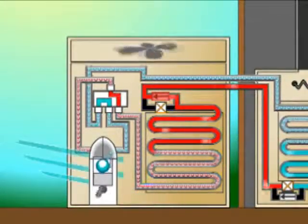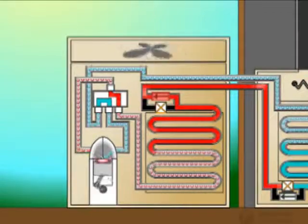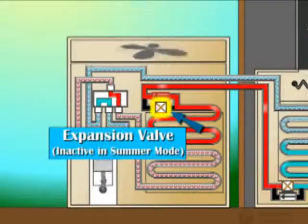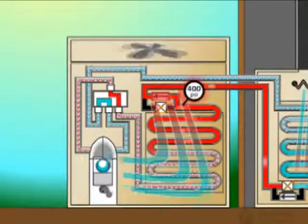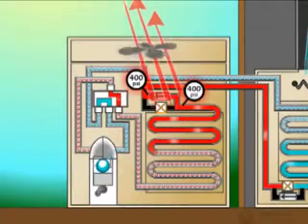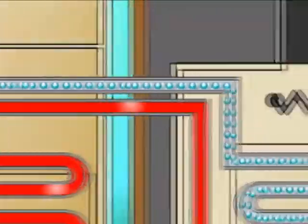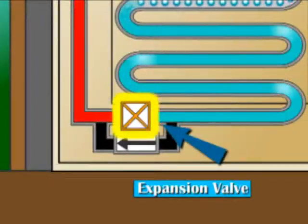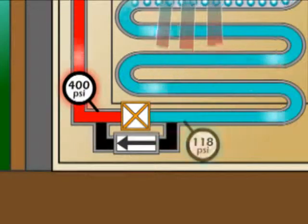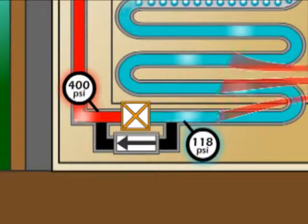The liquid refrigerant now bypasses the first expansion valve by means of a one-direction valve known as a check valve. The refrigerant, now cooler but still under high pressure, travels along the liquid line to the indoor unit where it is forced through the second expansion valve. This valve partially restricts the flow of refrigerant, creating the needed decrease in pressure, which allows the refrigerant to start evaporating.